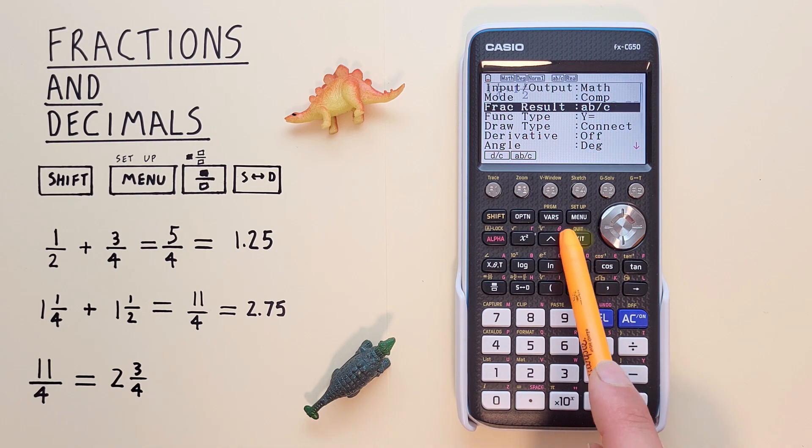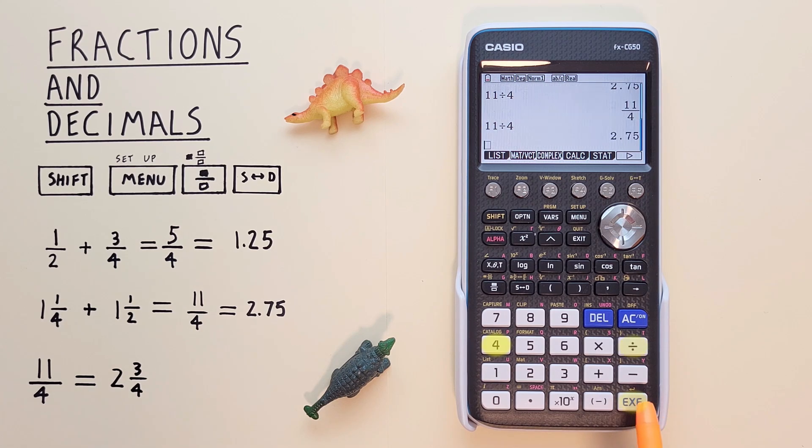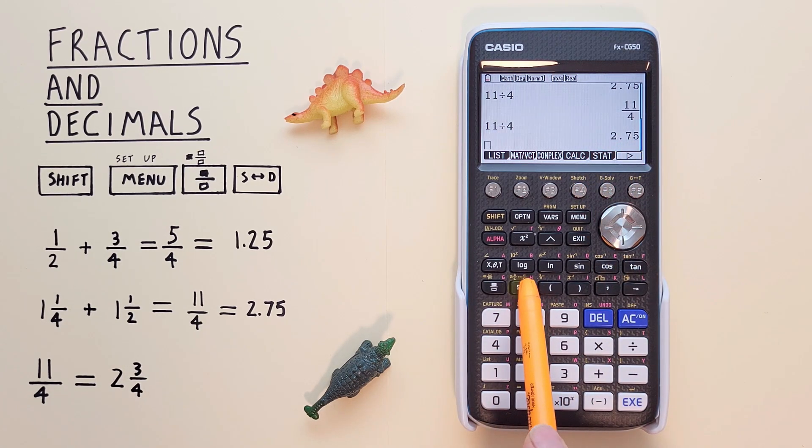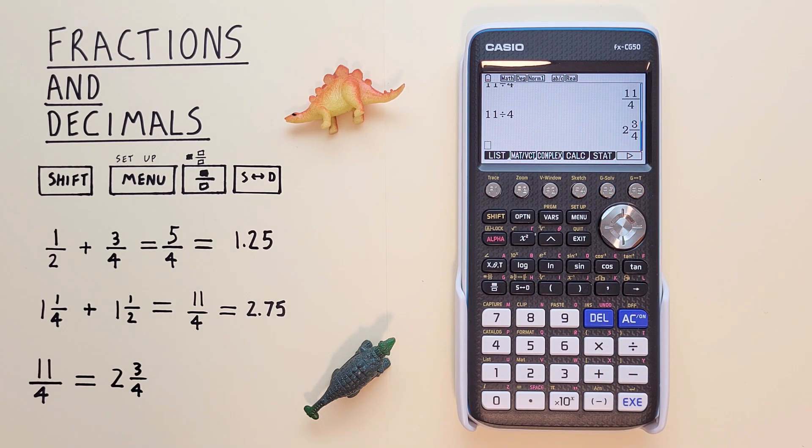And now if we exit out of here and go 11 divided by 4 exe or equals, first we get that decimal. And if we convert it, we see we get 2 and 3 quarters or a mixed number.